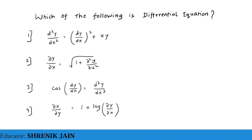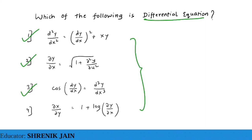Now, which of the following is a differential equation? A two-variable function is an ordinary differential equation; a more-than-two-variable function is a partial differential equation. So far so good, but let's look more carefully.